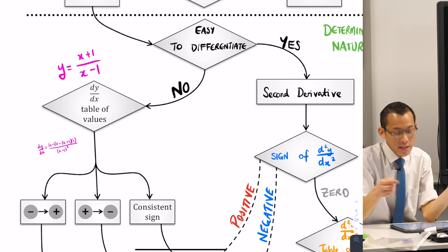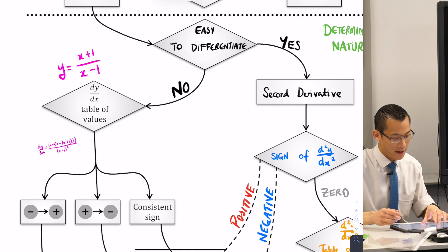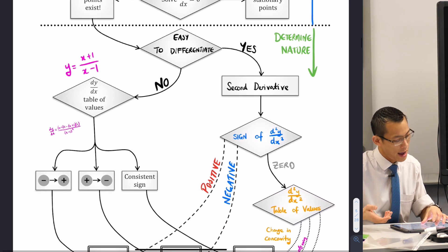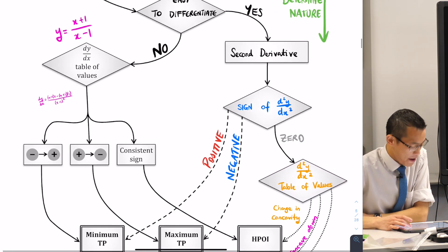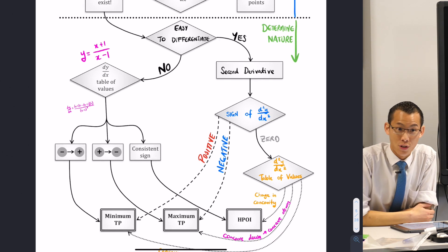Okay, so this is the main thing that guides you towards one or the other. Is it easy to differentiate? Then do it. If it's not easy to differentiate, then don't. Use the derivative you've already got, okay?